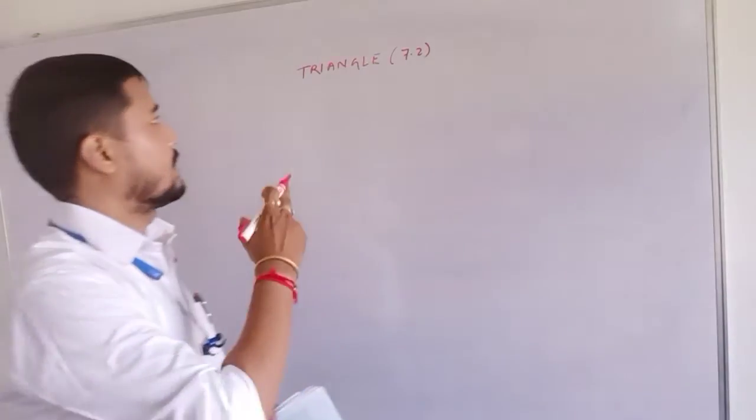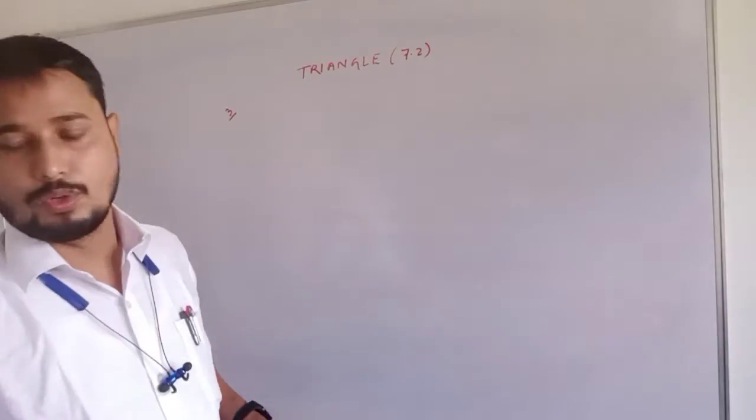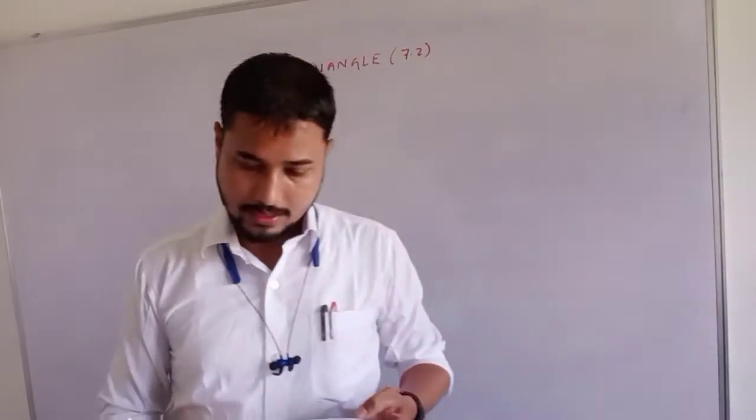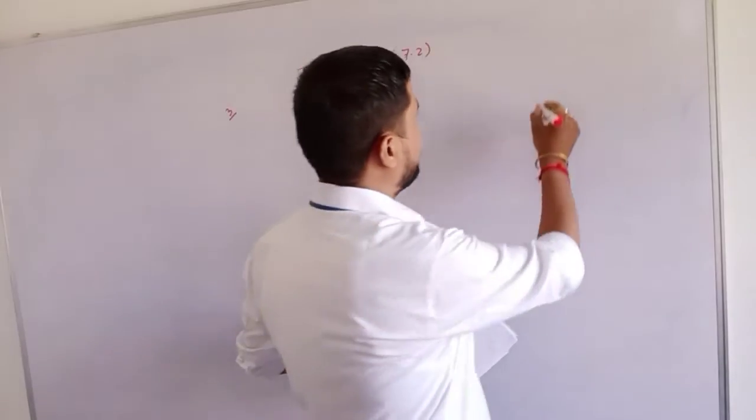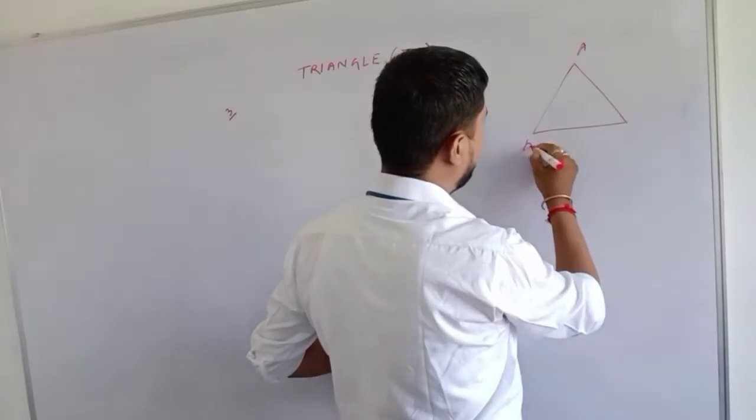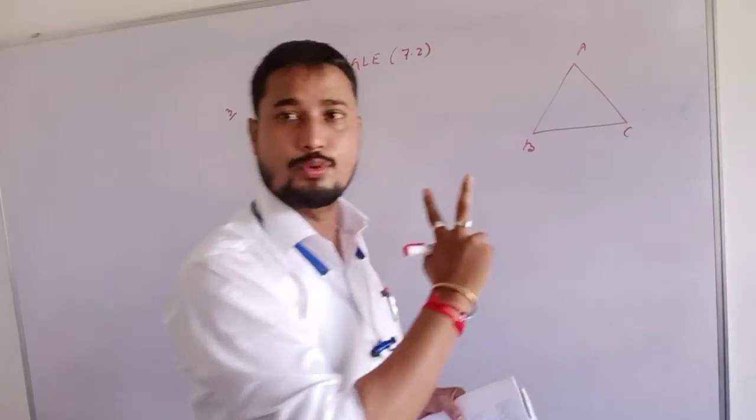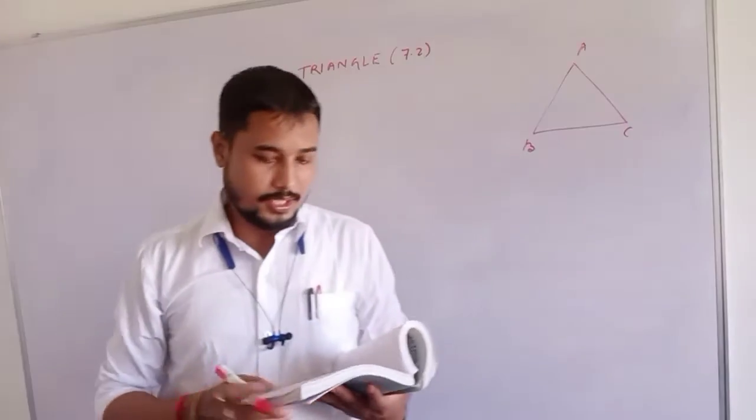Good morning. Triangle 7.2, question number three. Question number three is: ABC is an isosceles triangle. ABC is an isosceles triangle - isosceles, that is two sides equal and two angles are equal.